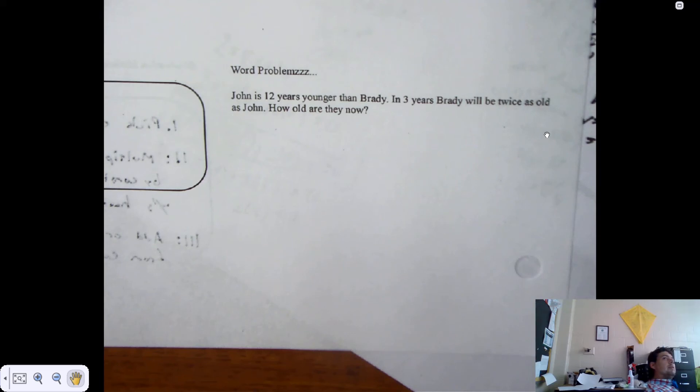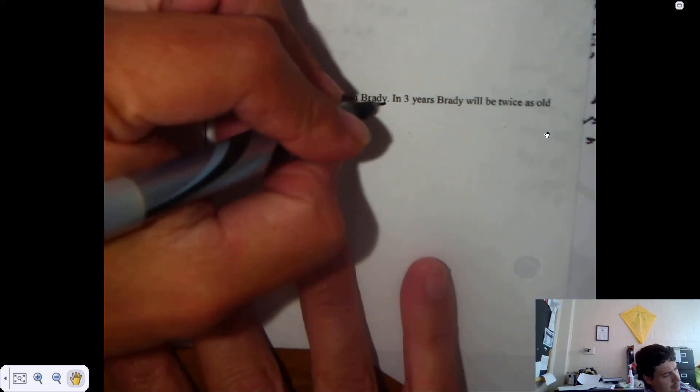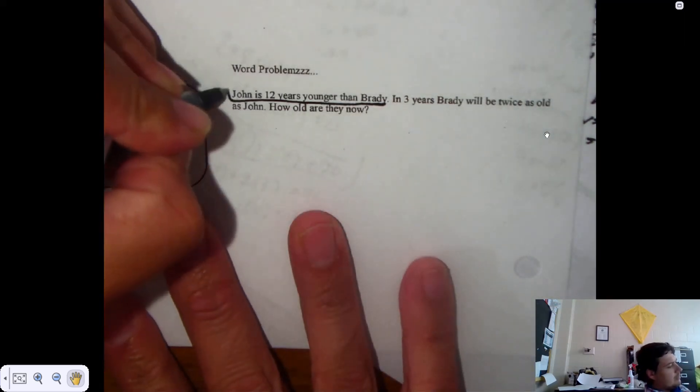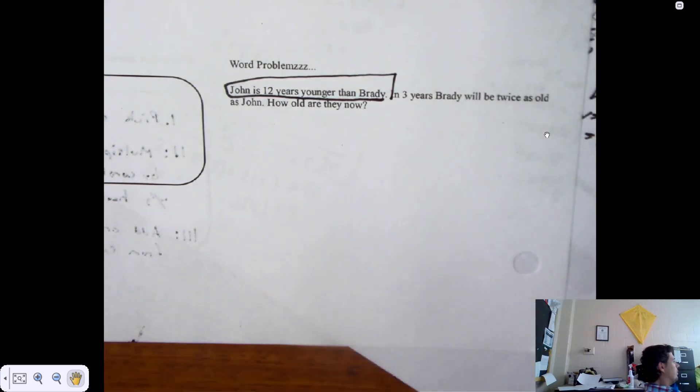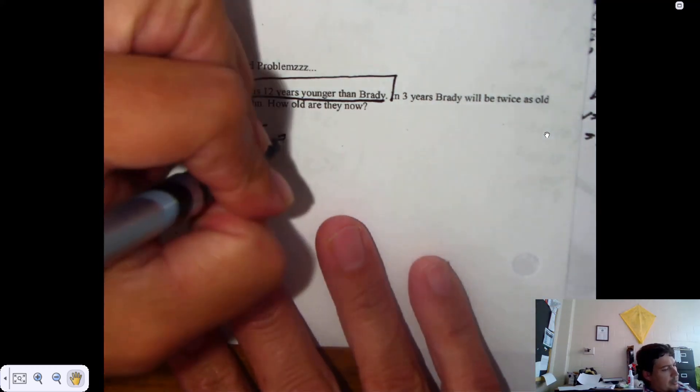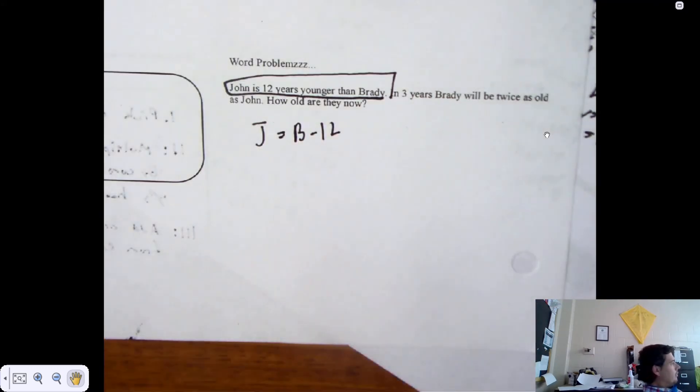Well, I guess you need to write some equations. I'm not going to call one of them X and one of them Y. John is J, Brady is B. Our variables will literally be BJ. There you go. Took you a minute. So John is 12 years younger than Brady. How can you write that out as an equation? J equals B minus 12. That's right. J equals B minus 12. John is 12 years younger than Brady. You're going to have to take away 12 from Brady.